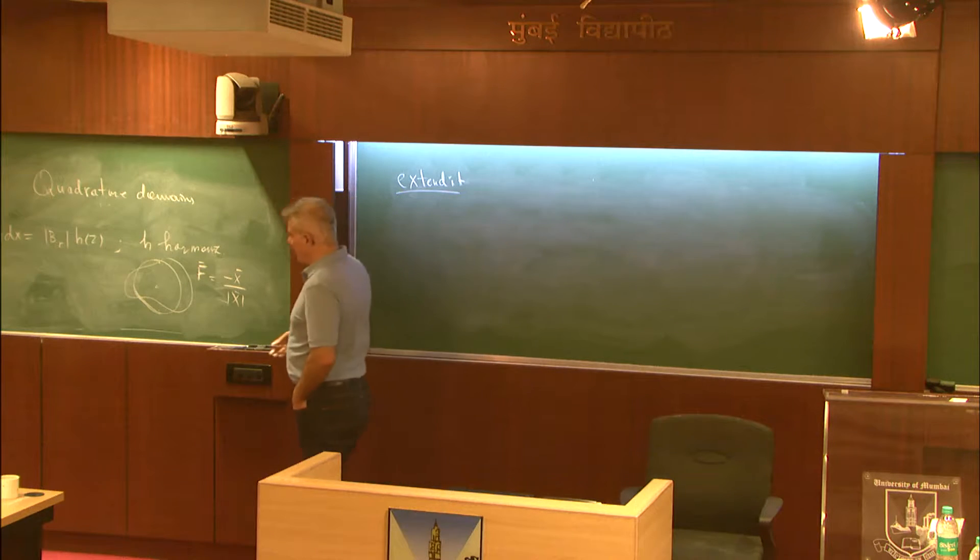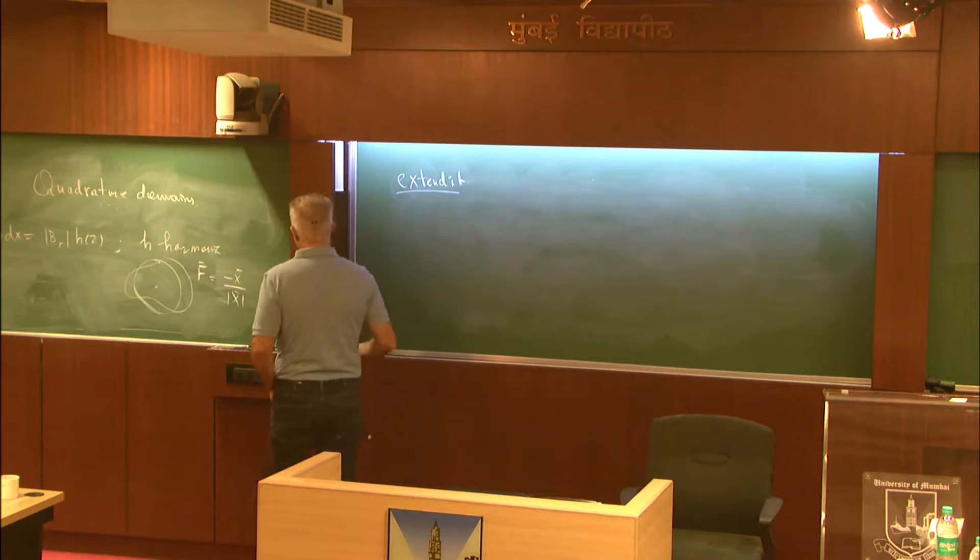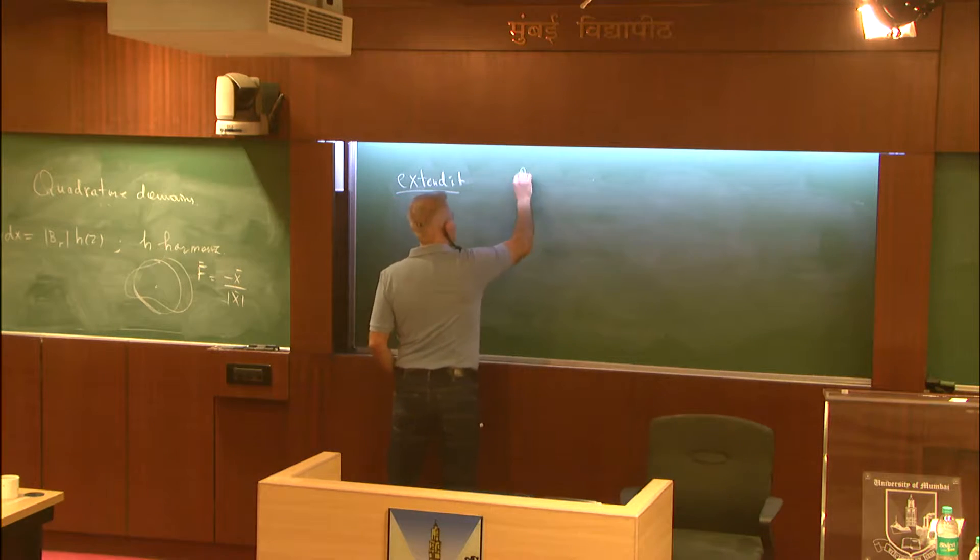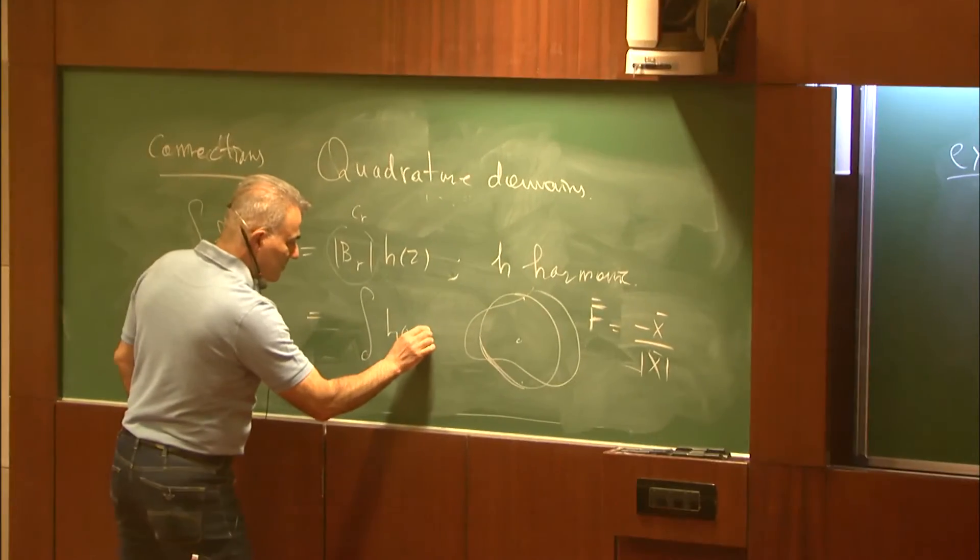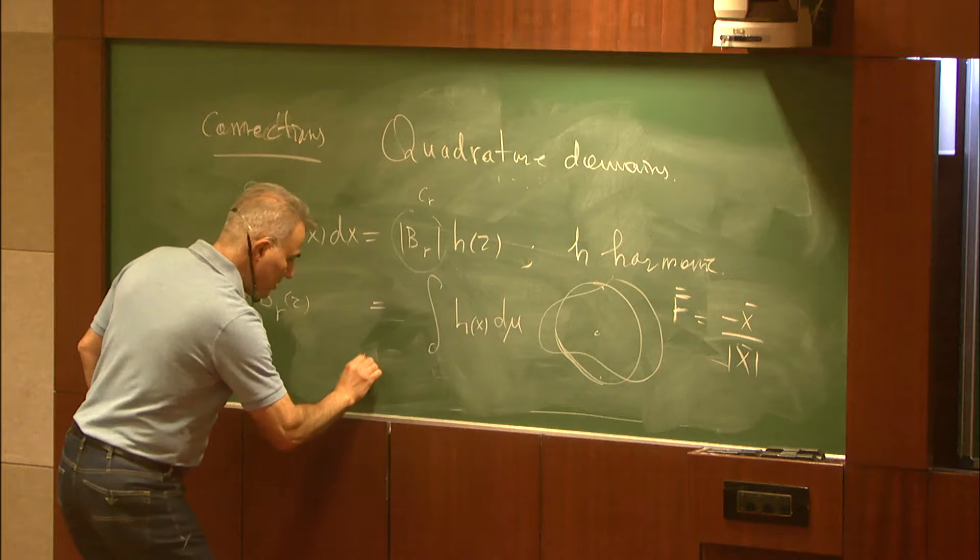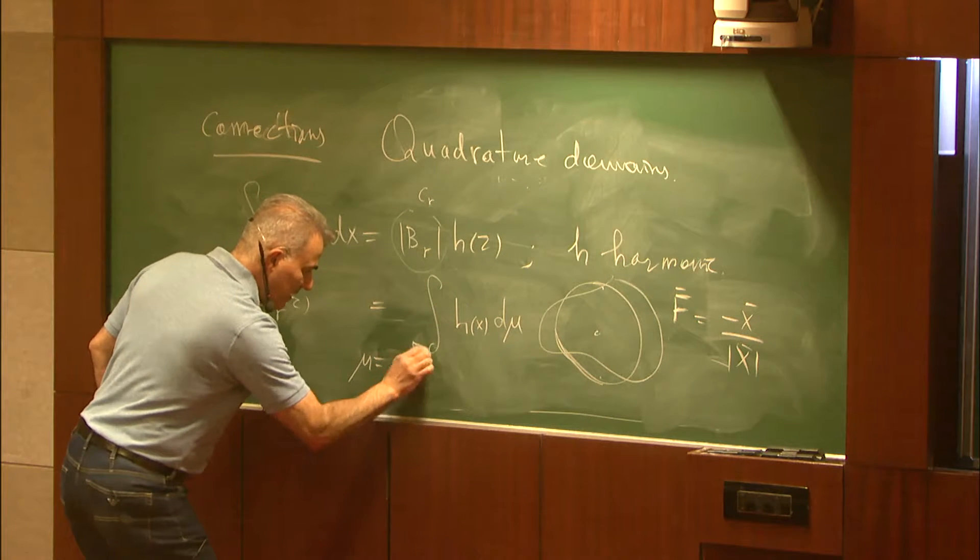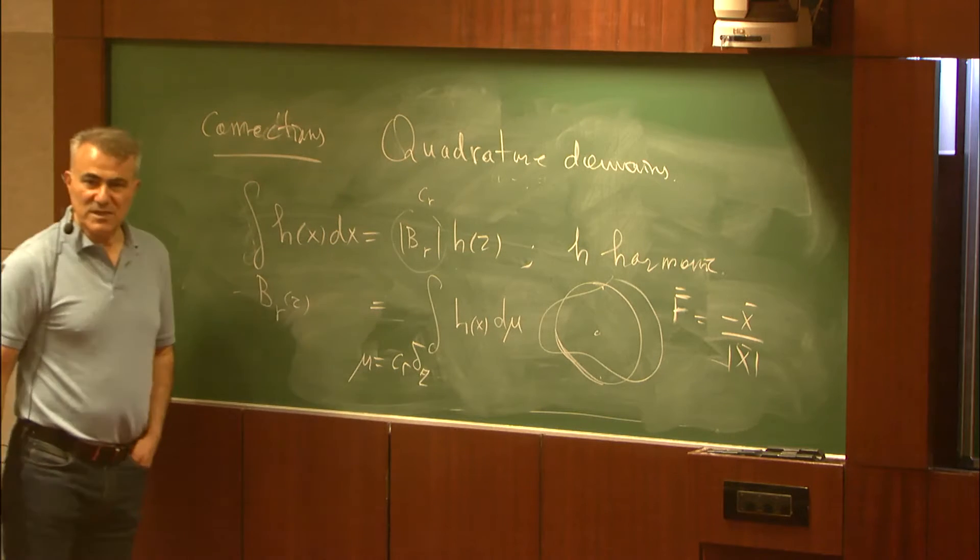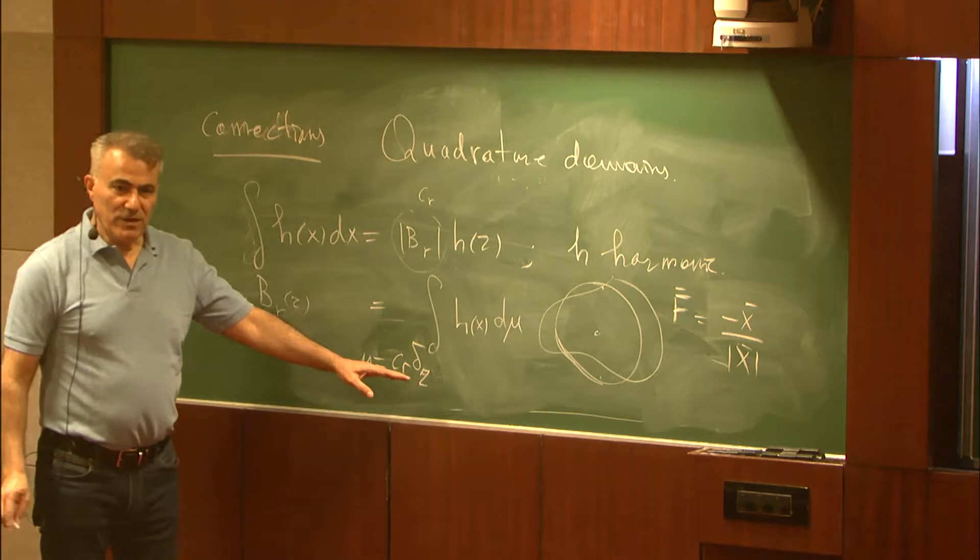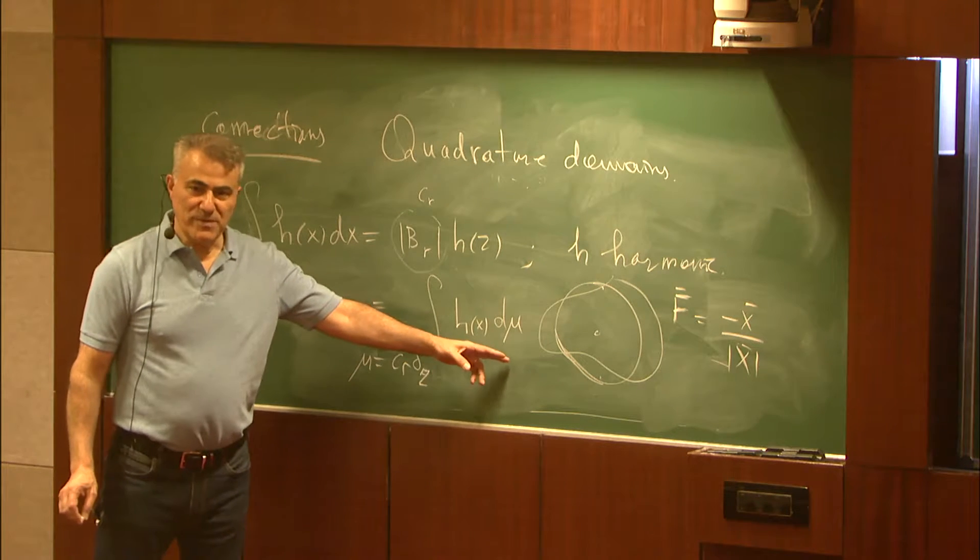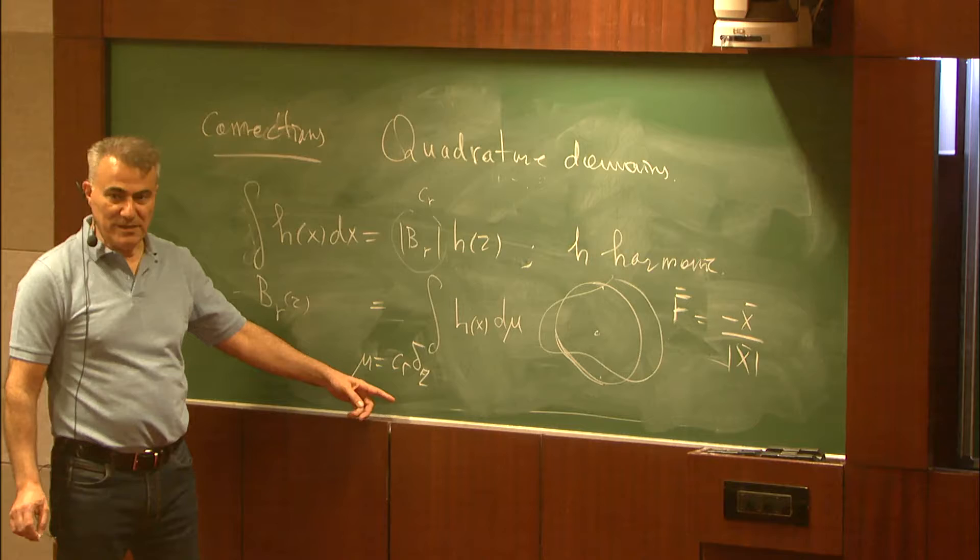If you want to extend this to the concept of quadrature domains, you can actually replace this. Let's go back here. If you rewrite this, this is going to be a constant, let's call it c_R, and then you have the harmonic function integrated with respect to the measure. That measure is c_R times the Dirac mass at the point z.